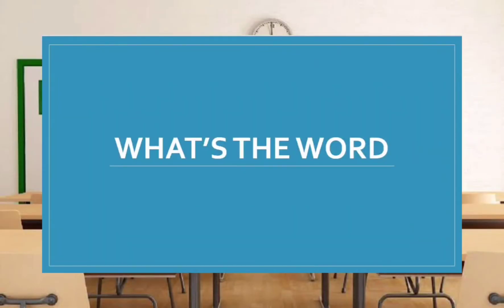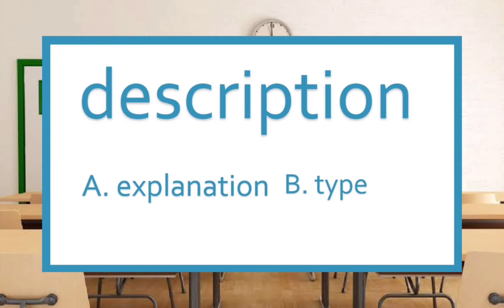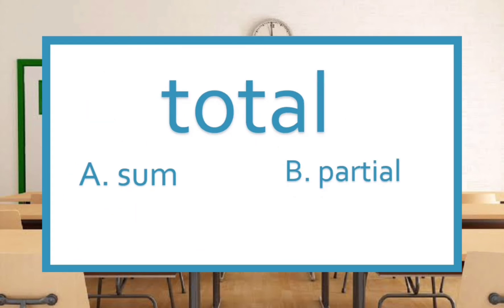The game is entitled What's the Word? You will just identify the synonym of the given word. Number 1: cost. Is it A. Remittance? Or B. Price? The answer is letter B, Price. Number 2: description. Is it A. Explanation? Or B. Type? The answer is A, Explanation. Last number 3: total. Is it A. Sum? Or B. Partial? The correct answer is A, Sum.